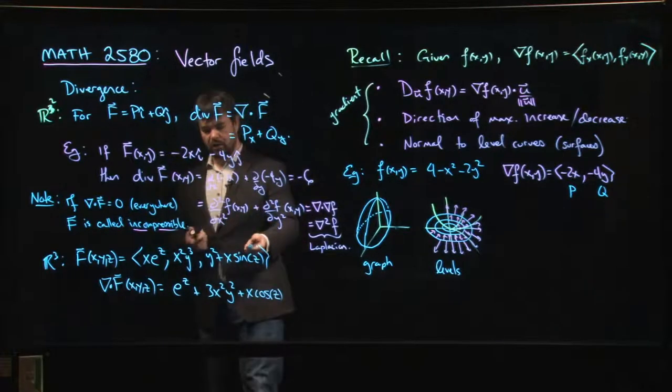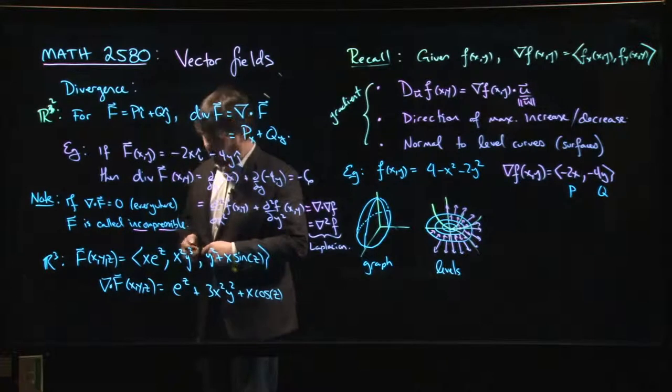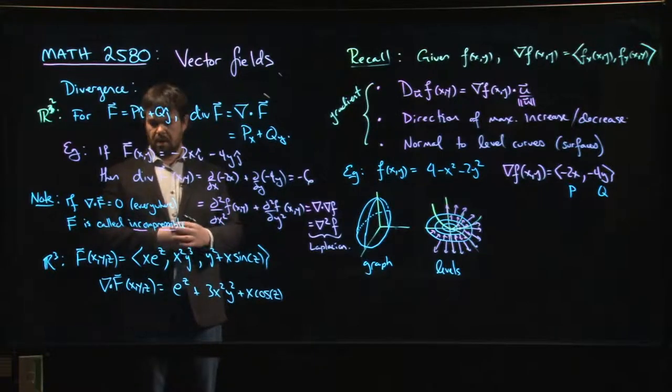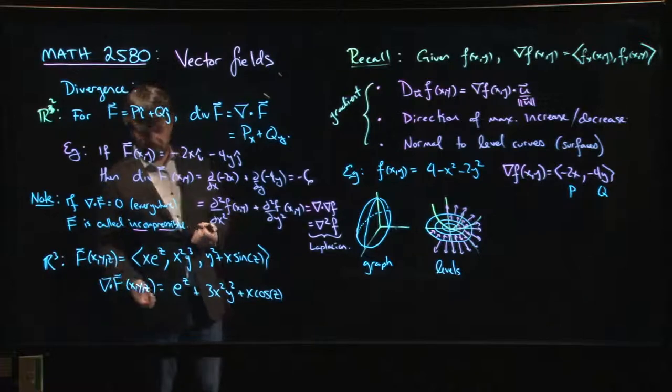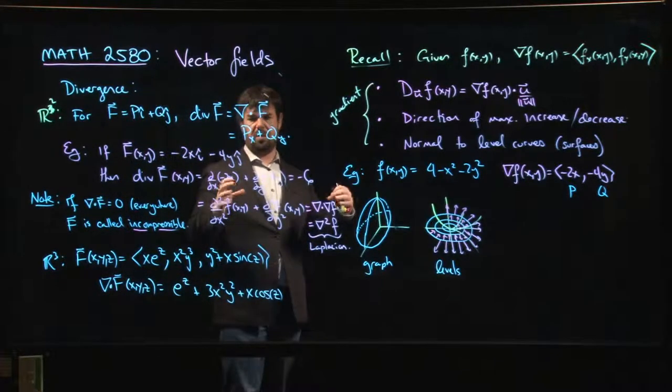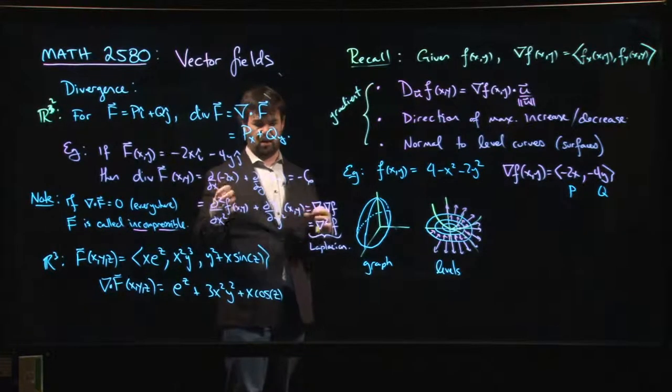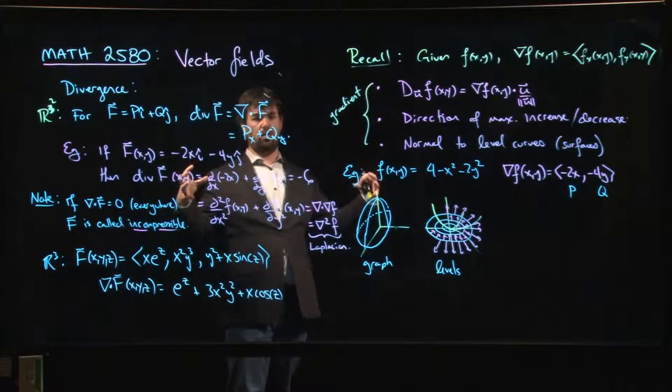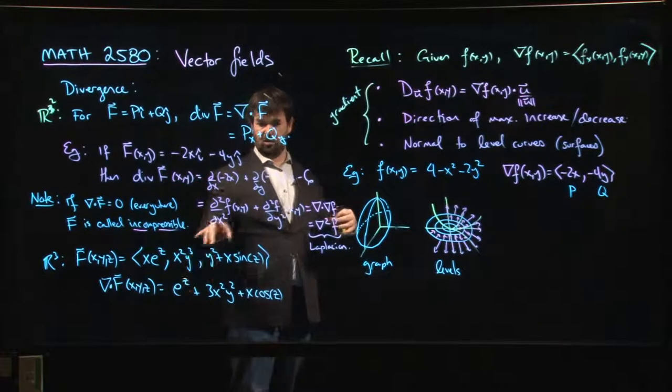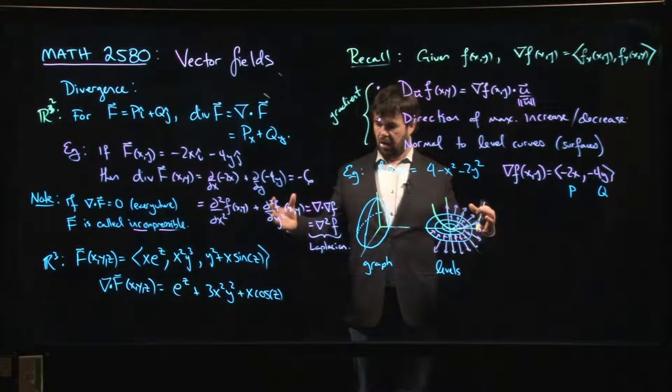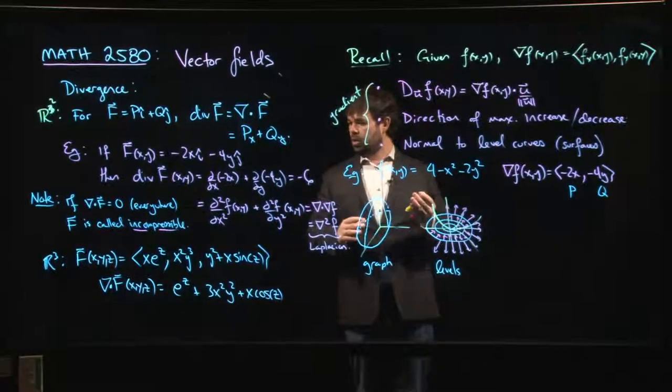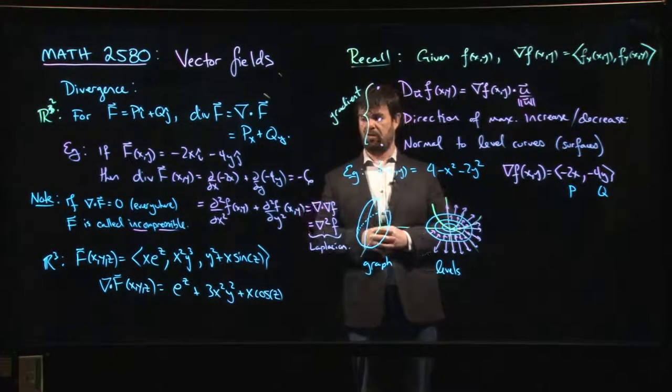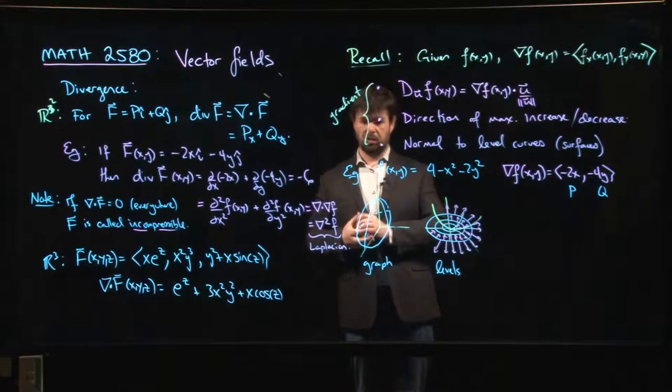So notice that the divergence takes a vector field as an input, gives you a function as an output. And in R3, this kind of idea of incompressibility is something that can come up. And so in some sense, the divergence is measuring this tendency, it's sort of measuring net flow at a point, kind of at any point in space or in the plane. How much is flowing in versus how much is flowing out? Is there a net difference? And if the divergence is non-zero, then there is some sort of net difference. So you have kind of things accumulating. You can make more careful sense of this once you talk about things like surface integrals. You can talk about this in terms of flux through a surface. And so this is something that we'll return to later on.